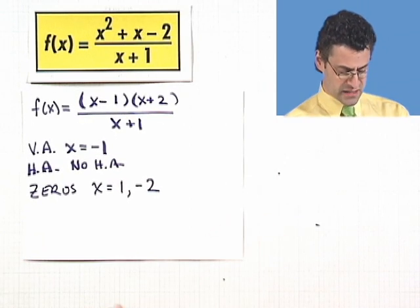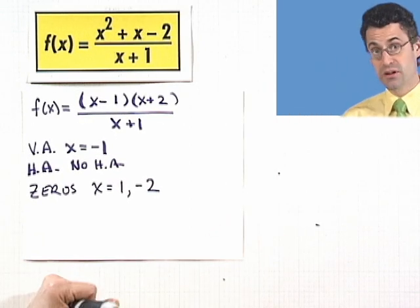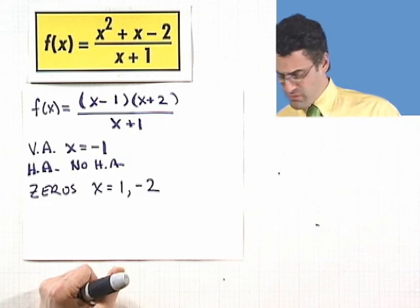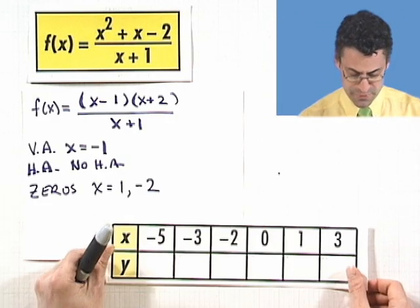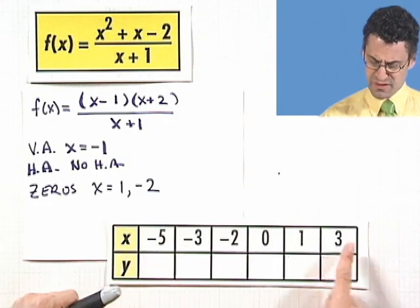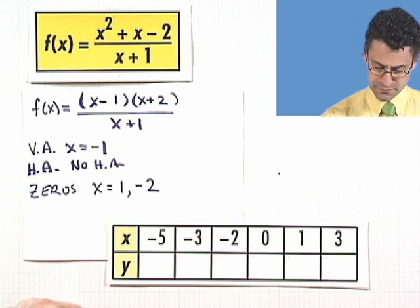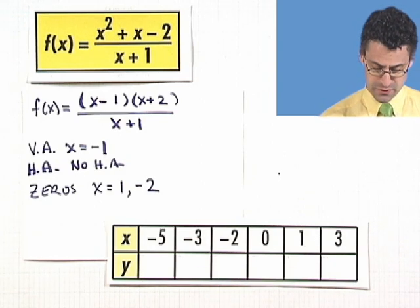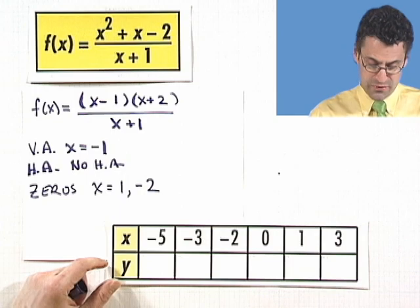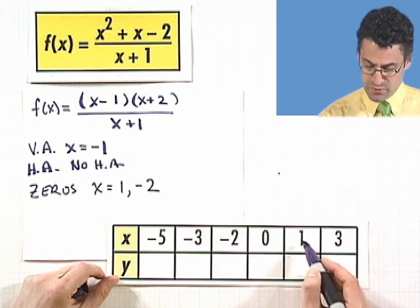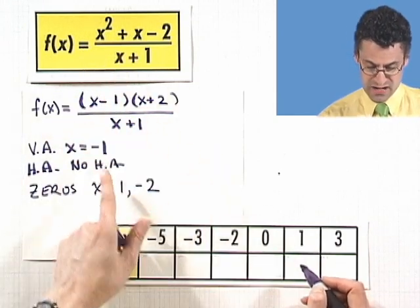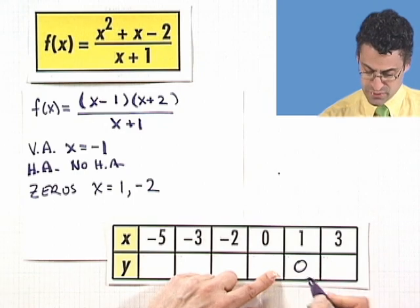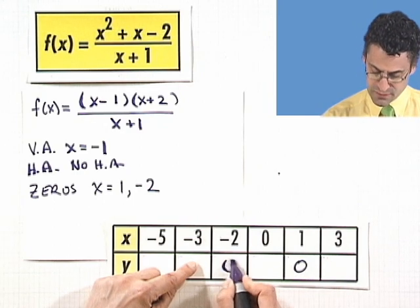All right, well armed with that, I claim we can actually plot a really accurate graph. But you might want some extra points, so we can make a little table up here. Various points for x and finding the corresponding values for y. Well, a few of these we know already. For example, at 1, we know it's got to be 0. Because we have 0 on top divided by 2, so that's 0. That's one of the zeros. Also negative 2, we know it's 0.